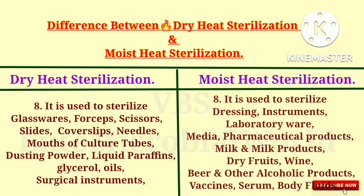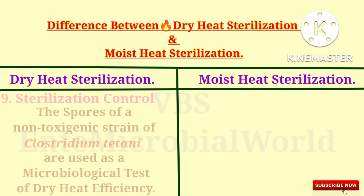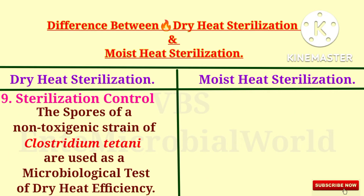Moist heat sterilization is used to sterilize dressings, instruments, laboratory media, pharmaceutical products, milk and milk products, dry fruits, wine, beer and other alcoholic products, vaccines, serum, and body fluids.